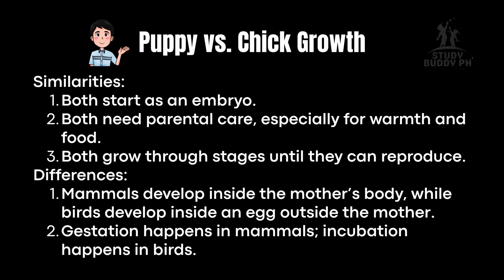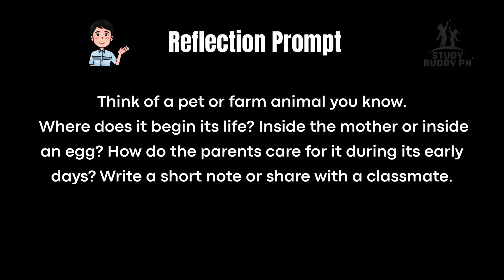Let's compare puppy versus chick growth. Similarities: both start as an embryo, both need parental care especially for warmth and food, and both grow through stages until they can reproduce. Differences: mammals develop inside the mother's body while birds develop inside an egg outside the mother. Gestation happens in mammals; incubation happens in birds. Now think of a pet or farm animal you know — where does it begin its life? Write a short note or share with a classmate.